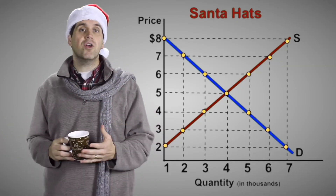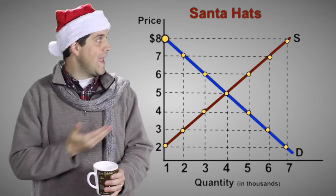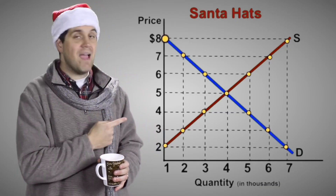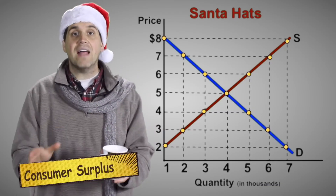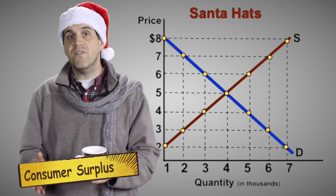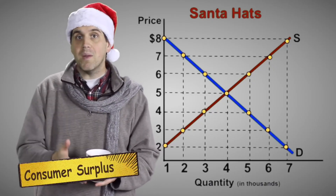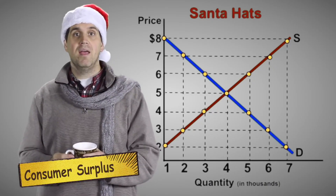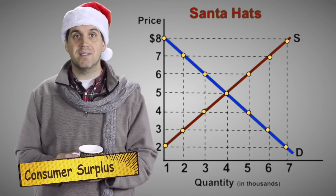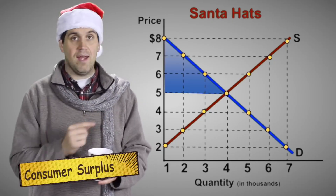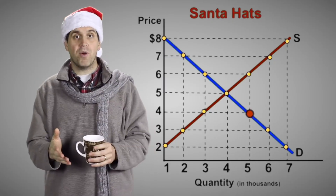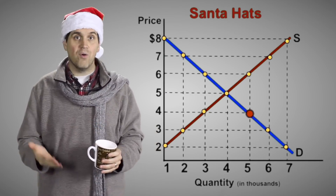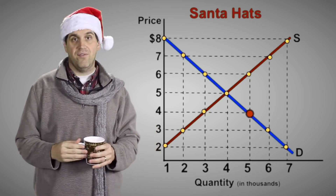The demand curve shows that someone out there is willing to pay $8, but they didn't — they paid $5. That's called consumer surplus. It's the difference between what you're willing to pay for something and what you actually do pay. The area of combined consumer surplus is this triangle right here. But what about the person who's willing to pay only $4? Well, they don't get it — they don't value hats enough.